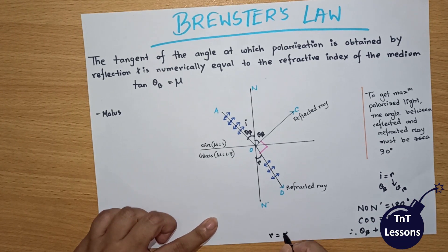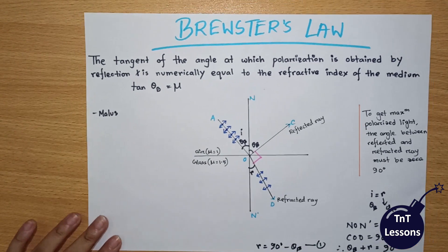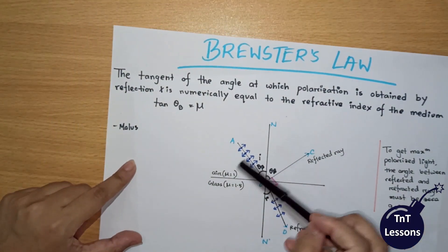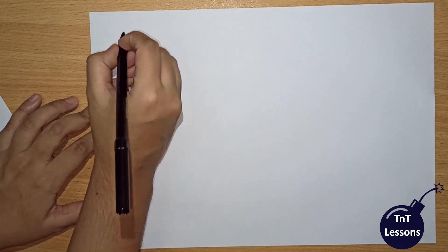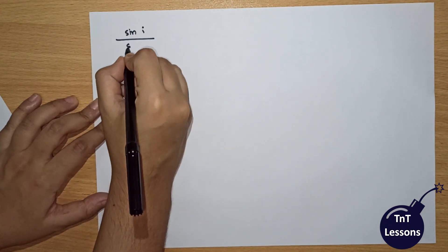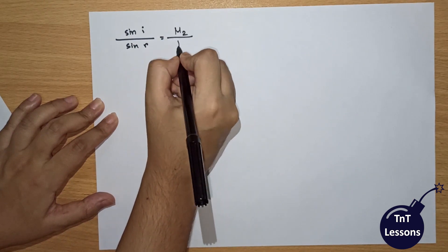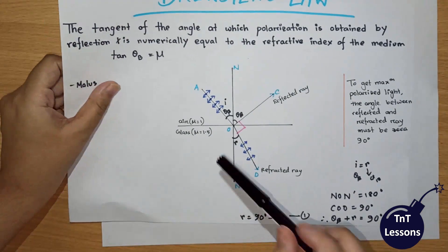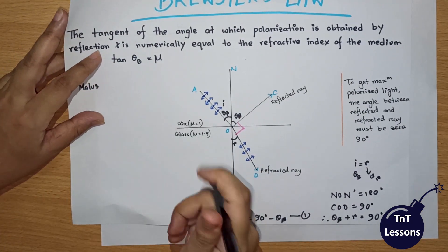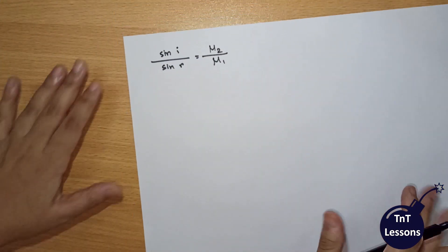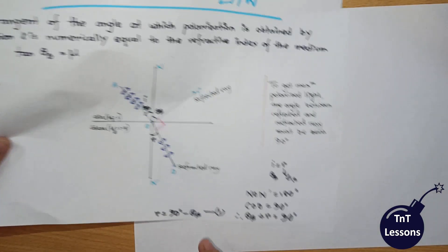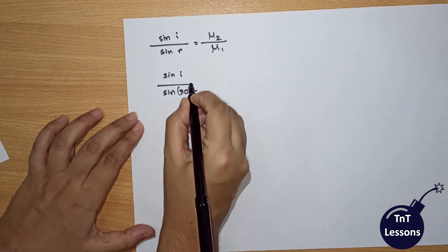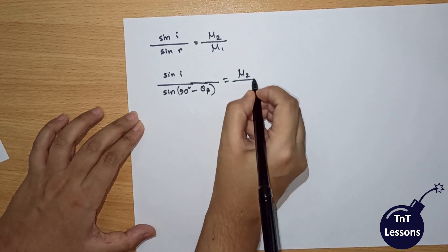We denote this as equation 1 and apply Snell's Law: sin i over sin r equals mu2 by mu1, where mu2 is equal to the medium. So sin i over sin r, where r equals 90 degrees minus theta B, gives 90 degrees minus theta B equals mu2 by mu1.